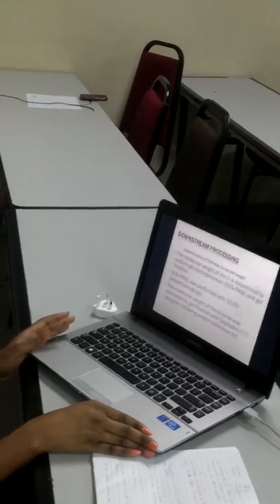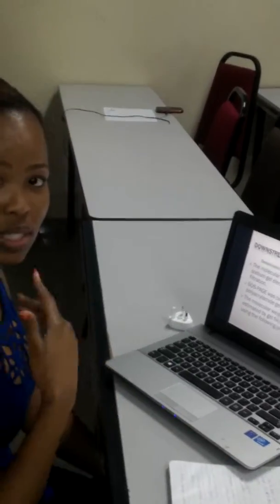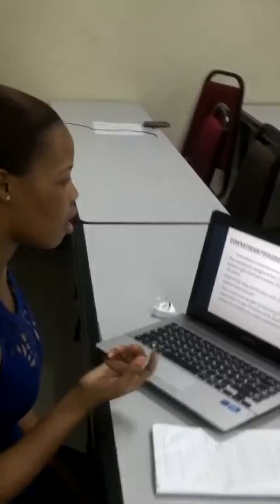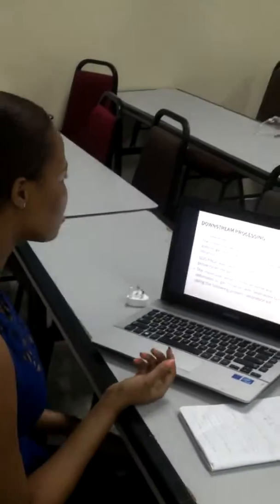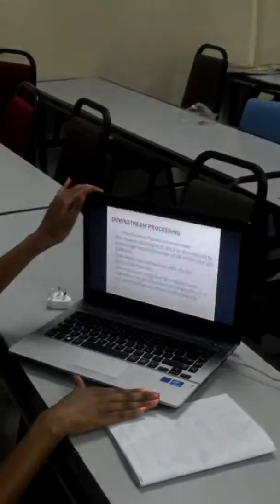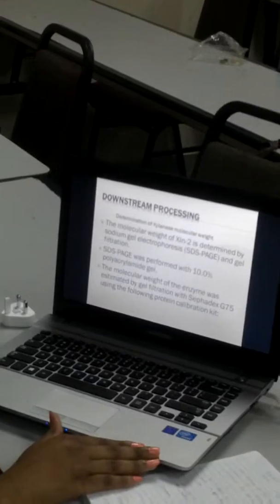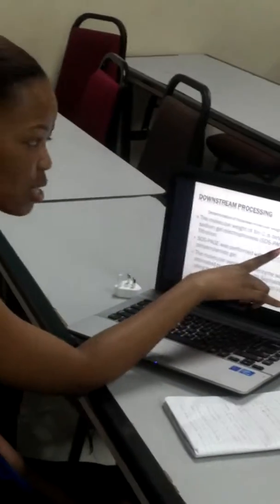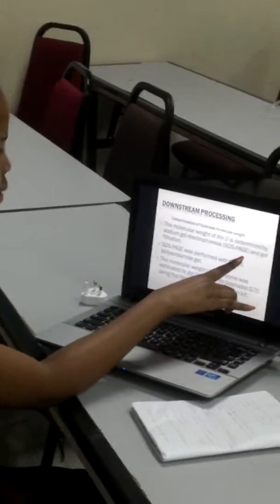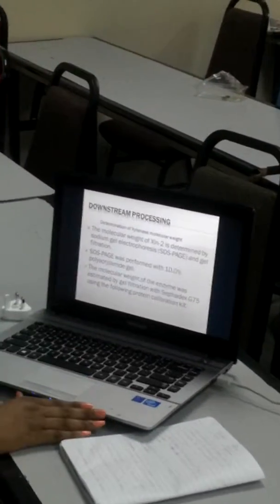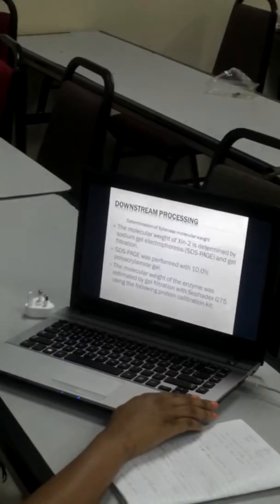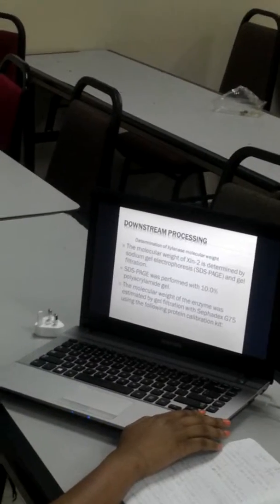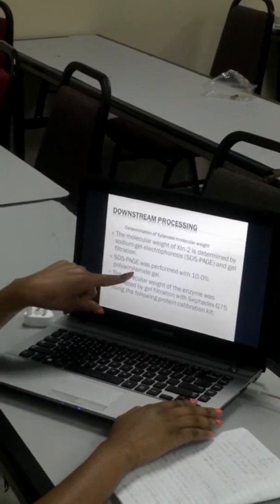Now we'll talk about the downstream processing. First, we'll determine the molecular weight of our main enzyme, which is xylanase. We determine the xylanase molecular weight using sodium dodecyl sulfate gel electrophoresis — specifically, we'll be using SDS-PAGE, as well as gel filtration. This will be performed with 10% polyacrylamide gel.